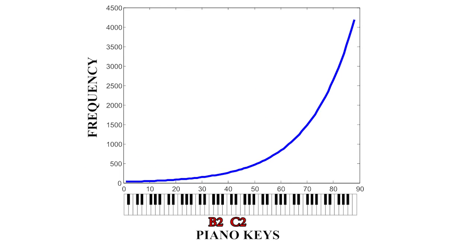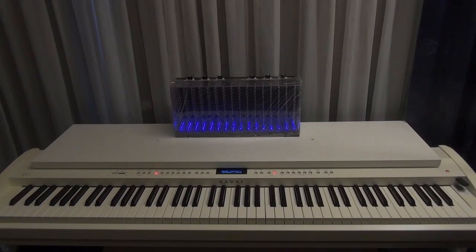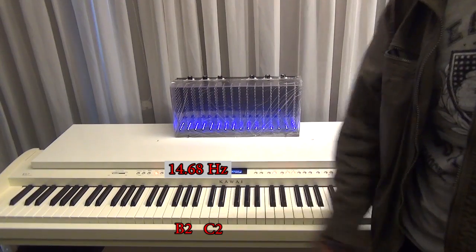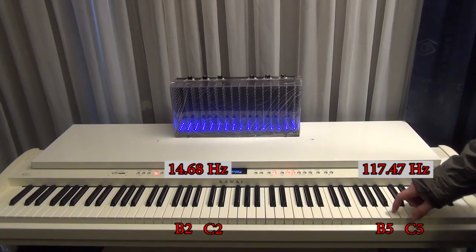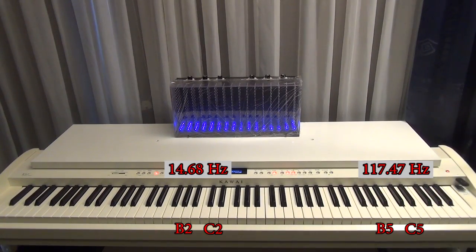For example, if we play B2 and C2 on the piano, the frequency difference is 14.68 Hz. When we go three octaves higher and play B5 and C5, the frequency difference between these notes is over 117 Hz. Even though there's a large difference between these two numbers, our brain will still hear the same interval. Let's try it on the piano. Now let's play three octaves higher. We hear two exactly the same intervals.